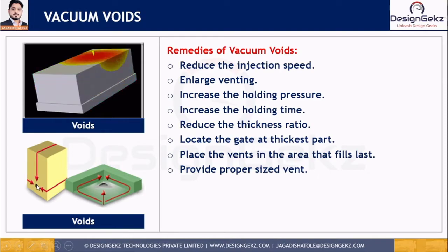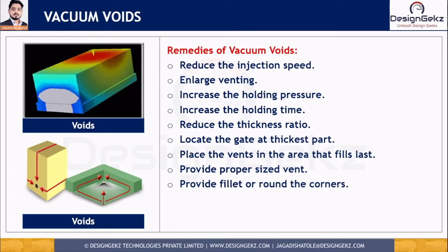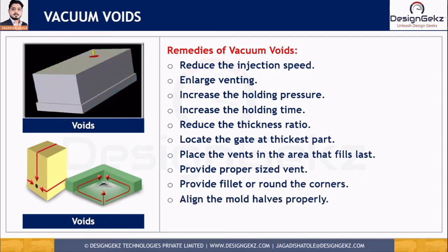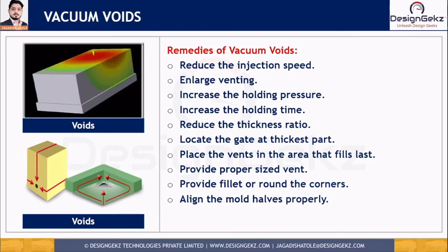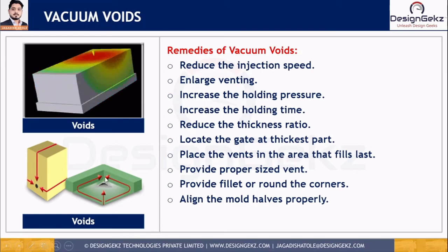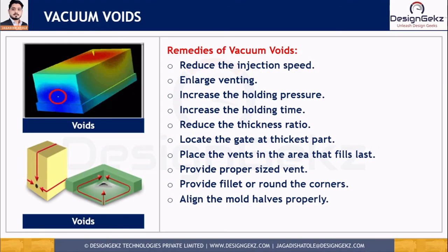It is very important to use the proper vent size. We can also eliminate void defects by providing fillets so that air will not get trapped, and by aligning the mold halves properly, because improper alignment or misalignment causes vacuum voids. Ensure that the mold halves are correctly aligned. With these remedies we can mitigate vacuum void defects. Most defects are caused by non-uniform thickness and sharp edges on the part, so the thumb rule for a design engineer is to maintain uniform thickness and provide fillets to all sharp corners and edges. Except at the parting line, no edge should remain sharp.